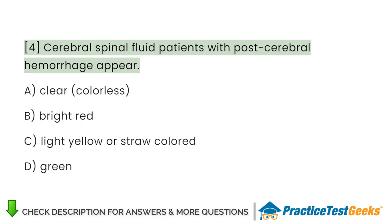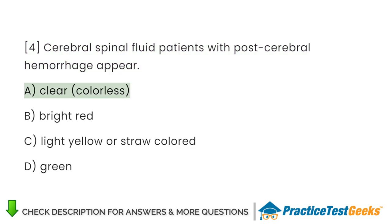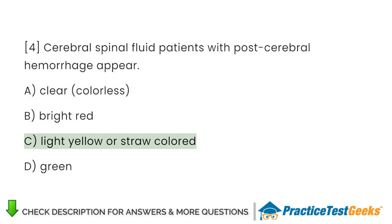Cerebrospinal fluid of patients with post-cerebral hemorrhage appears: A. Clear, colorless. B. Bright red. C. Light yellow or straw-colored. D. Green.